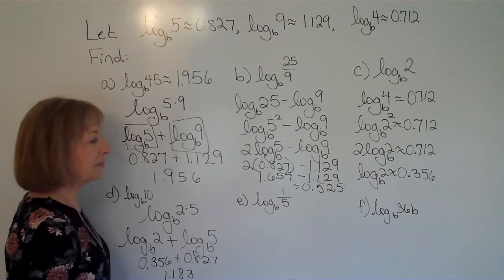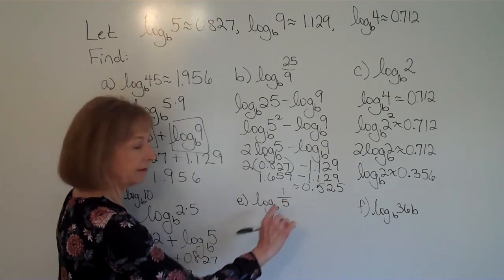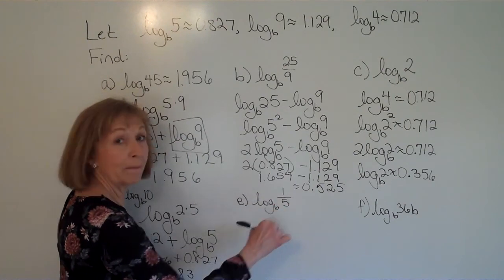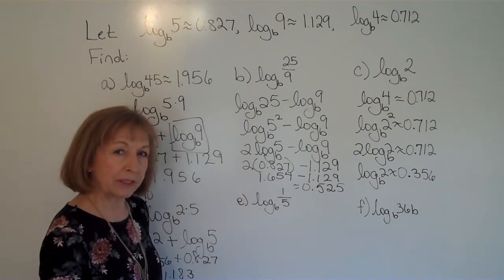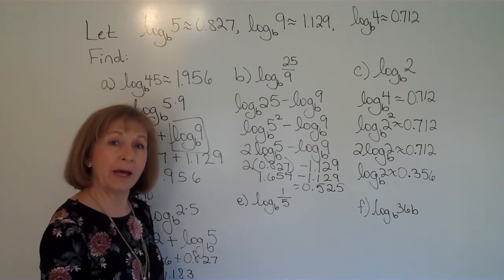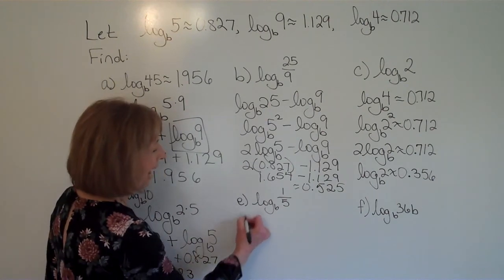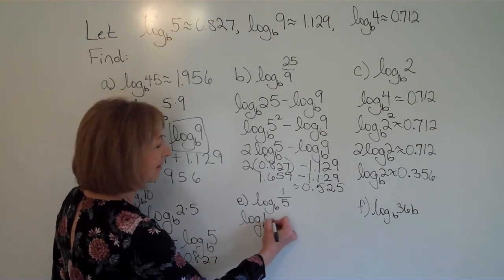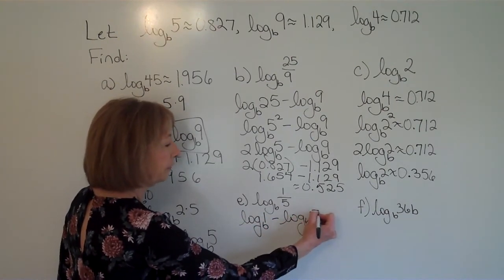Okay, log base b of 1 fifth. Here, I can write that's the log base b of a quotient. So that's the log of the numerator minus the log of the denominator. And again, if you've forgotten what the properties of logarithms are and each of these things that we're doing, go back to a previous video that talks about the properties of logarithms and review that so that a lot of this flows a little bit more comfortably for you.